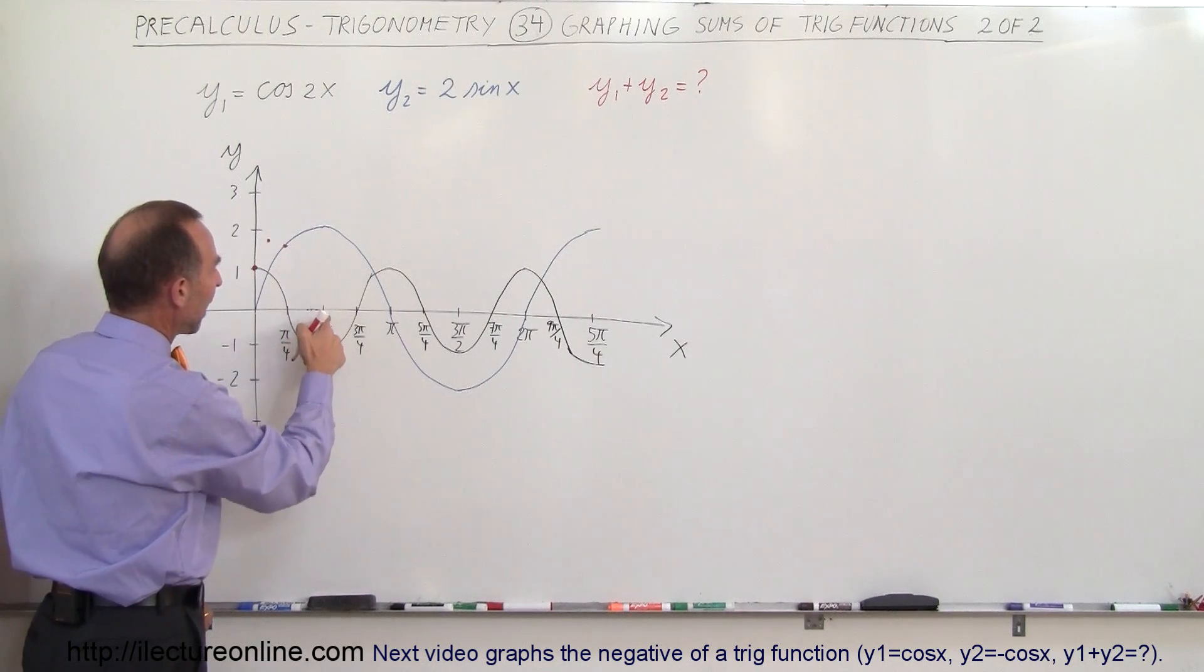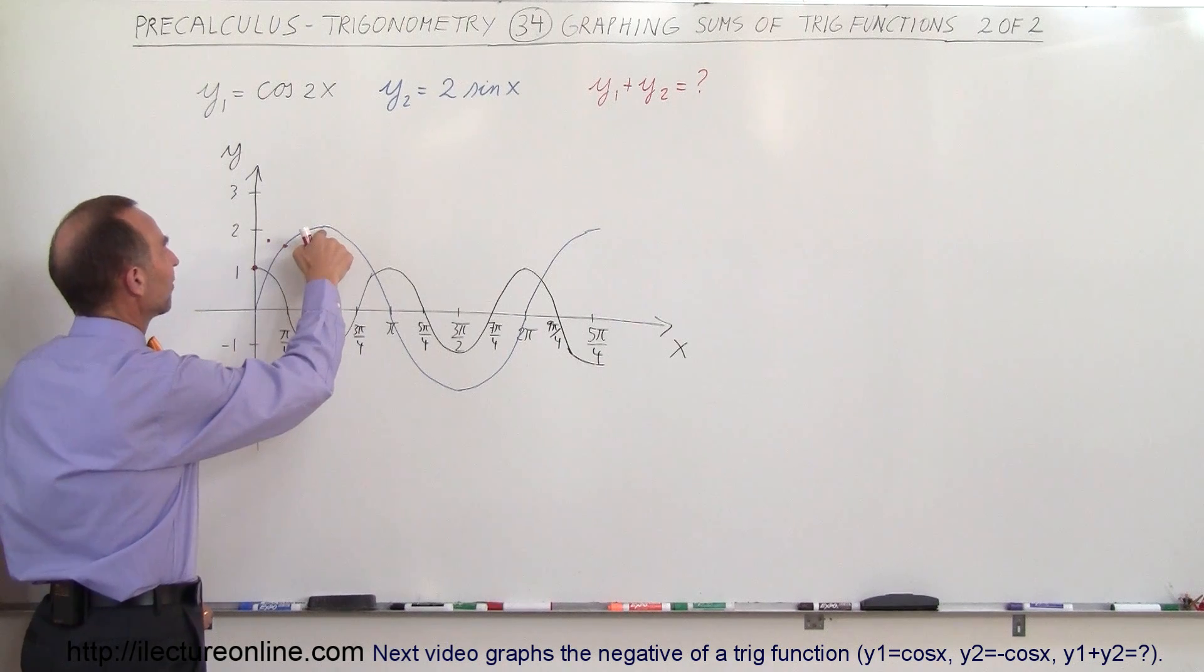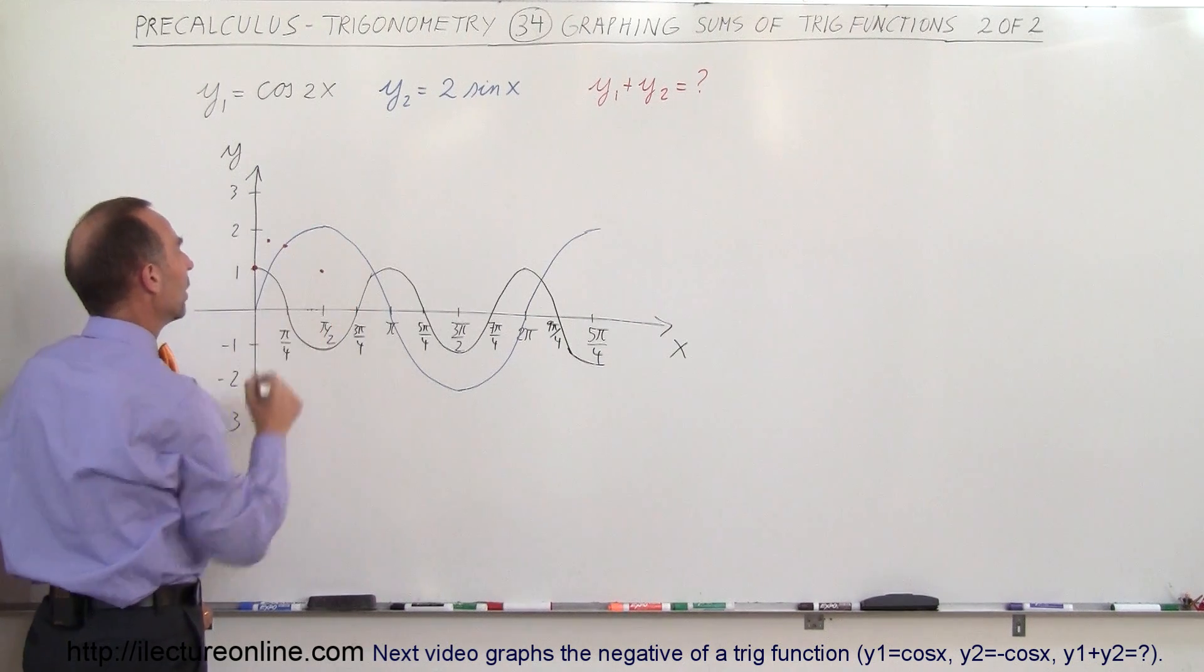At the value of pi over 2, notice that the cosine function is negative 1, and the sine function is 1, so we add it together, we get 1.